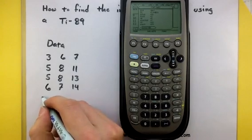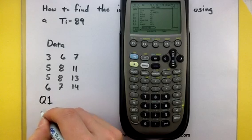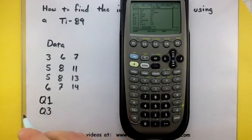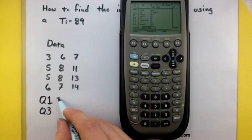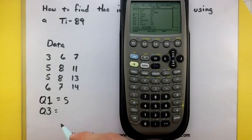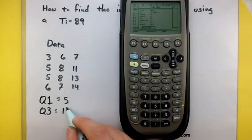Once you have these, feel free to write them down. Let's see. My Q1 says that it is equal to 5, and Q3 says it is equal to 11.